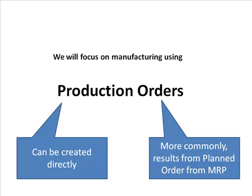But it's also possible to create a production order directly — it's not necessary to go through the MRP process, create a planned order, and then convert it. There could be some situations when you just go in, create a production order, and get the work done. In that sense, a production order — just like any other order like a purchase order, sales order, maintenance order, or transfer order — is the document that initiates the process.